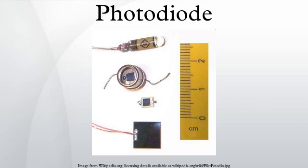A photodiode is a semiconductor device that converts light into current. The current is generated when photons are absorbed in the photodiode. A small amount of current is also produced when no light is present.